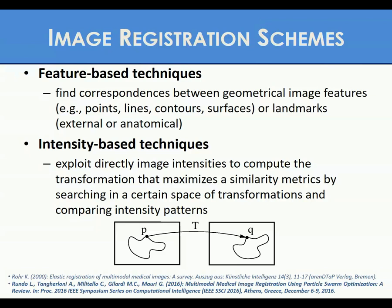Registration approaches can be principally distinguished in two different schemes. Feature-based techniques find correspondences between geometrical image features such as points, lines, contour surfaces, or landmarks. Features or landmarks are first extracted from the input images, and then a transformation is established according to the correspondence between the found features. However, segmenting and finding correspondences are very difficult tasks. On the other hand, intensity-based techniques directly exploit image intensities to compute the transformations that maximize a similarity measure by searching in a certain space of transformations and comparing intensity patterns. The main advantage of these schemes is that explicit image segmentation or feature extraction is not required.